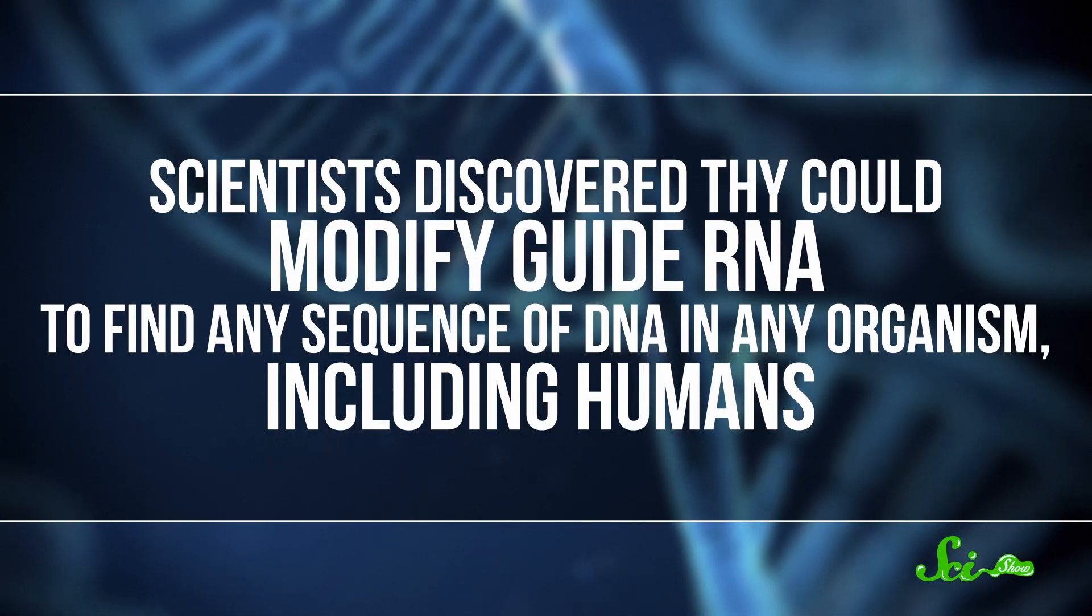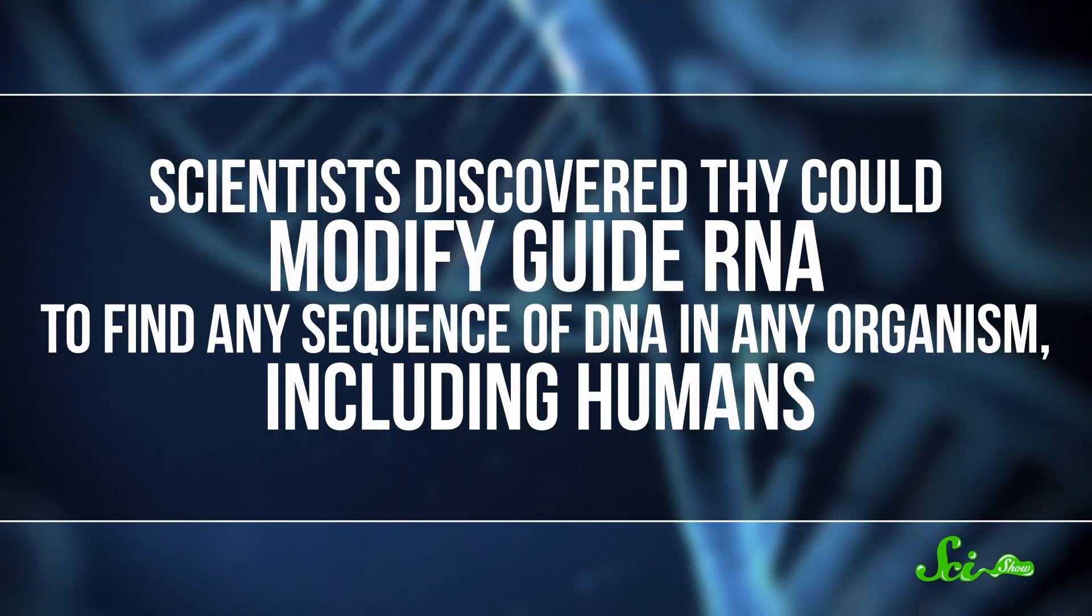Scientists discovered that they could imitate this process, modifying guide RNA to find any sequence of DNA in any organism, including humans. So theoretically, they could inject a segment of DNA that represents a healthy, unmutated gene, and use that to replace a mutated one in an egg or sperm cell. The genome of that germ cell would be permanently edited, and so would all of the cells in the organism that it went on to form.